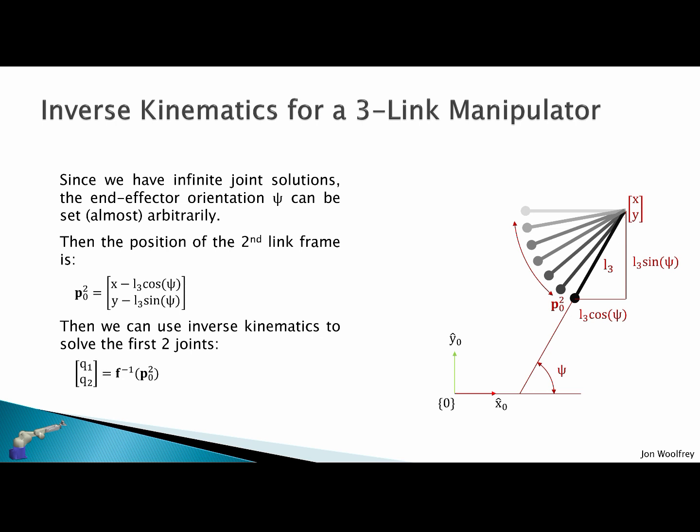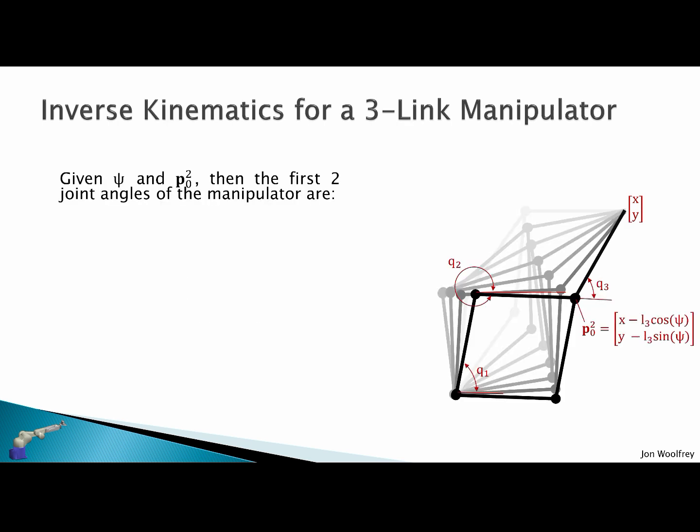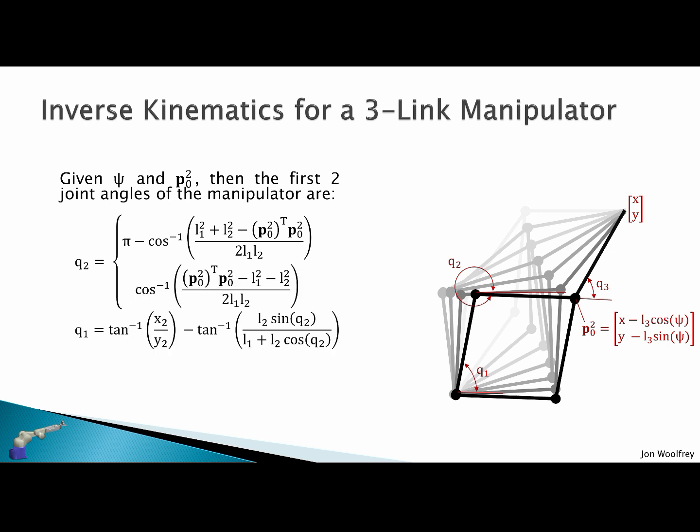So we need the inverse kinematics q1 and q2 for the position of the second link. Given psi and the position of the second link frame, then the first two joint angles of the manipulator are q2 which we saw previously had two different solutions, and q1 which is given by this expression here. And finally the third joint is simply q3 equals psi minus q1 plus q2. As you can see in this diagram here, we have the elbow up and elbow down for this configuration, but also all the potential possible configurations we could have set the third link. And this is only a few of infinitely many.